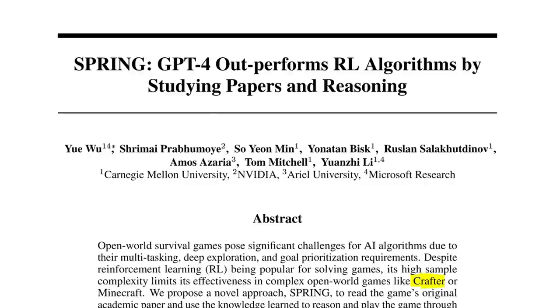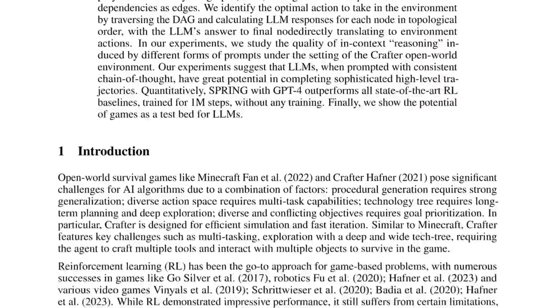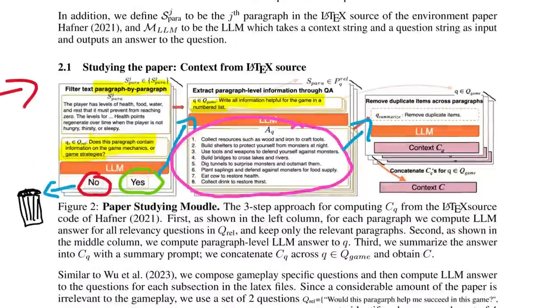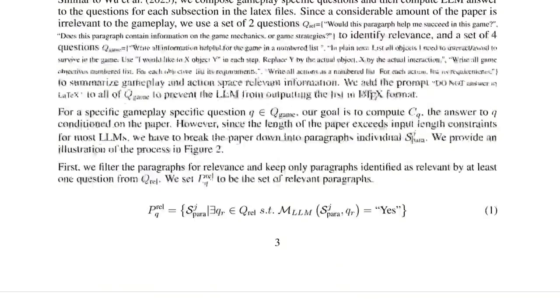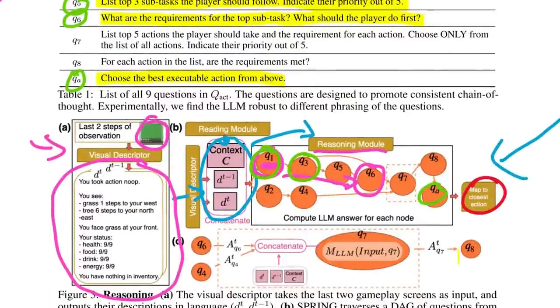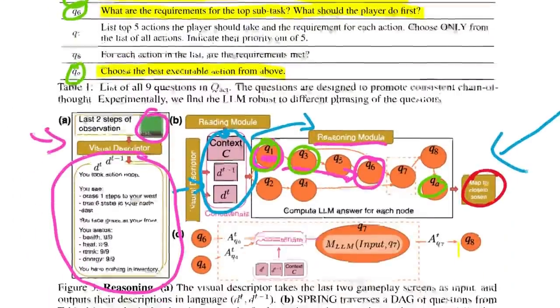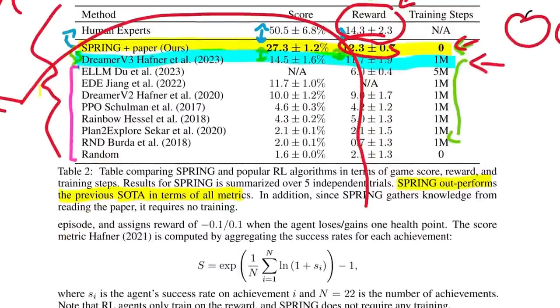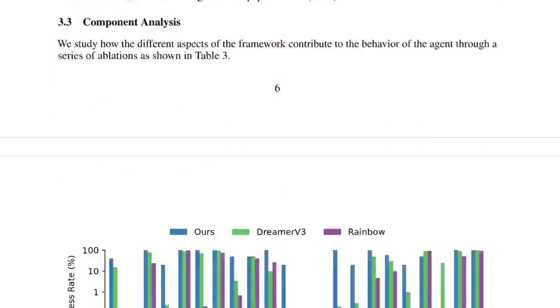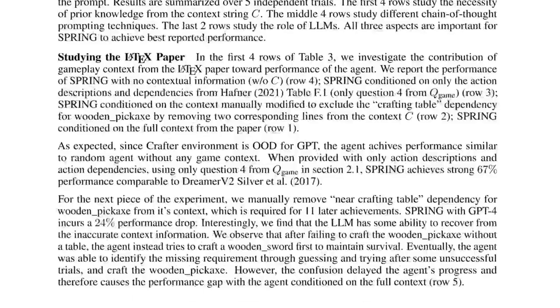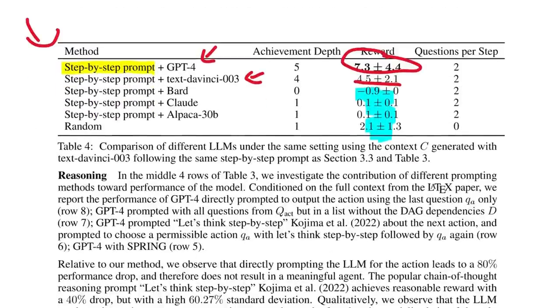So there we have it. Spring GPT-4 outperforms RL algorithms by studying papers and reasoning. My final thoughts in 30 seconds. The authors designed a really neat LLM-based system to perform some simple logic. While it is cool, I do worry about how useful and robust this sort of approach is. Instead of focusing on comparisons with RL methods, I think a more interesting future direction may be to investigate how to make systems like this more general and robust. If you like this and you like hearing about cool ML research, consider subscribing. It really does mean a lot. Or follow me on Twitter if you want some of my hot takes. And thanks for watching.